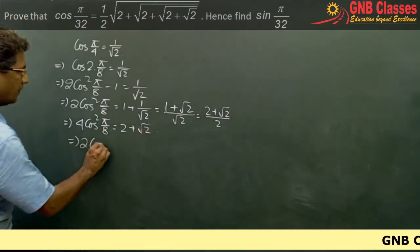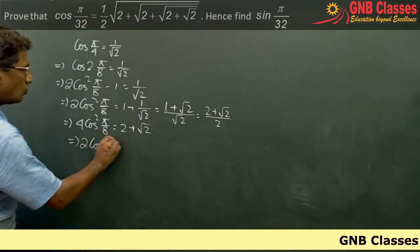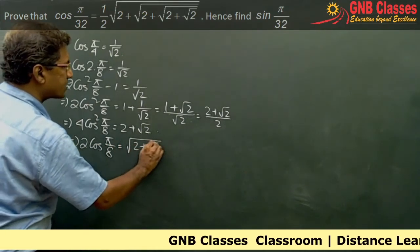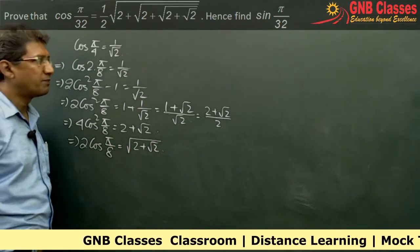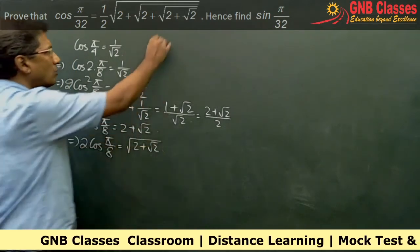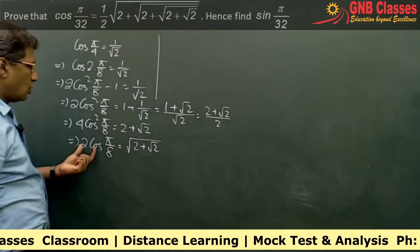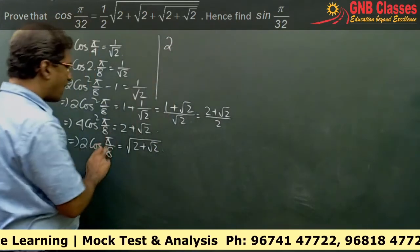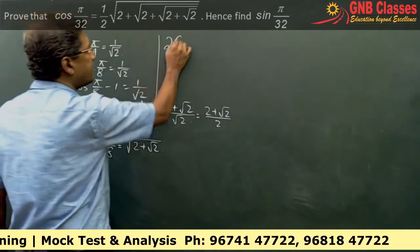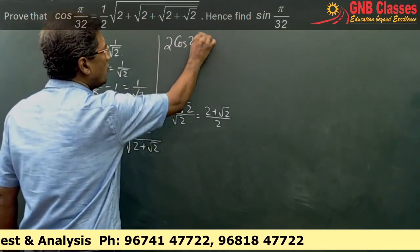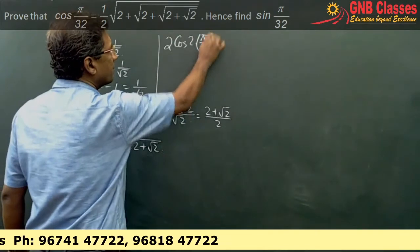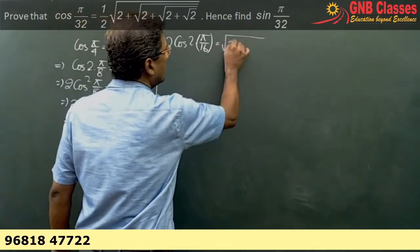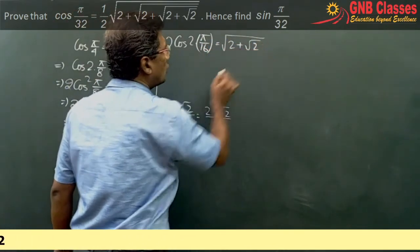So we are getting 2cos(π/8) = √(2 + √2). Now looking carefully, cos(π/8) can be written as cos(2 × π/16), which equals √(2 + √2).